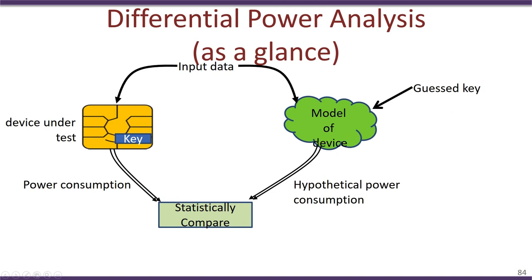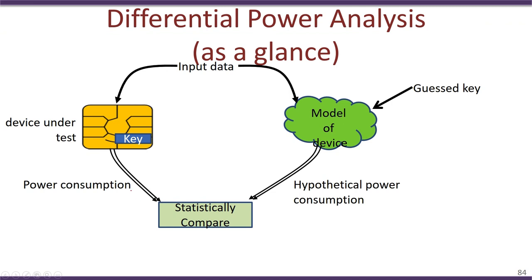The actual power consumption is measured with the real secret key being computed, while the hypothetical power model uses a guessed key. The attacker then performs a statistical analysis comparing these two power consumptions. If the guessed key is correct, this statistical comparison will confirm it; if the key is wrong, the comparison will show low correlation. We will now look in more detail at how this differential power analysis attack actually works.